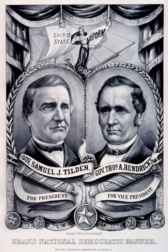The 1876 U.S. presidential election occurred at the twilight of Reconstruction and was between Republican Rutherford B. Hayes and Democrat Samuel J. Tilden. After an extremely heated election dispute, a compromise was eventually reached where Hayes would become U.S. president in exchange for the end of Reconstruction and a withdrawal of U.S. federal troops from the South.